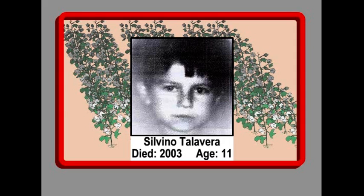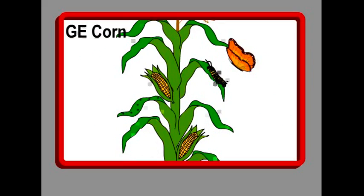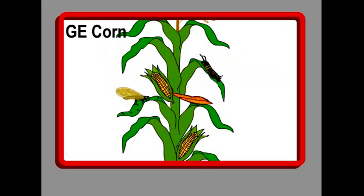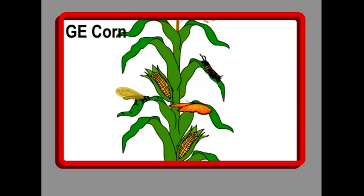This is Silvino Talavera, who came from a poor family in Paraguay. He was only 11 years old when he died in 2003 from double exposure to pesticides sprayed on GE soya farms near his house. How can we stand by while innocent children are exposed to these poisons every day in the name of profit? Researchers have found that a certain type of GE corn pollen can cause the decline and death of the beautiful monarch butterfly. In fact, pesticide-tolerant GE crops can be fatal to many types of insect larvae, including those of beneficial insects.